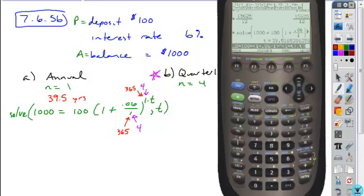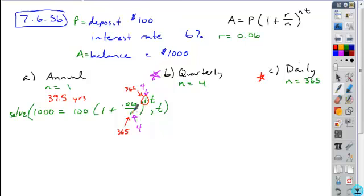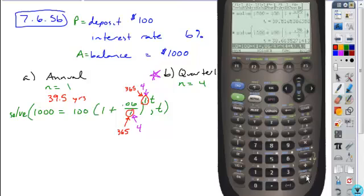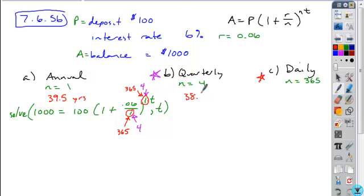For my next scenario, all I have to replace is exchange the 1 for a 4. I replace it in both places where the number of compoundings would occur. And when I replace that and hit enter, I get 38.66, so approximately 38.7 years.